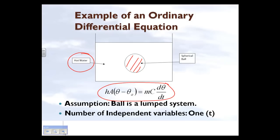In this case, theta is the temperature and t is the time, so we're seeing how temperature varies as a function of time. It depends on parameters such as the mass of the ball, the heat capacitance of the ball, the convection coefficient between the ball and the hot water, the surface area of the ball, and the ambient temperature of the hot water. Subject to initial conditions, we are able to solve this problem.